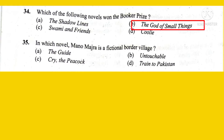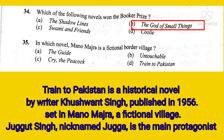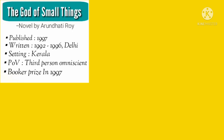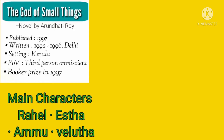Which of the following novels won the Booker Prize? The right answer is B, The God of Small Things. In which novel is Manu Majra a fictional border village? The right answer is Train to Pakistan, a historical novel by Khushwant Singh, published in 1956, set in Manu Majra, a fictional village. Jagat Singh, nicknamed Jaga, is the main protagonist. The God of Small Things is a novel by Arundhati Roy, published in 1997. Its setting is Kerala, with a third-person omniscient point of view, and it won the Booker Prize in 1997. The main characters are Rahel, Ammu, and Velutha.